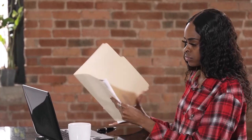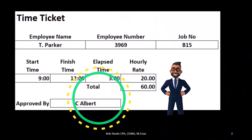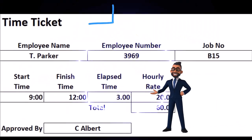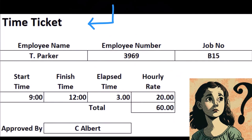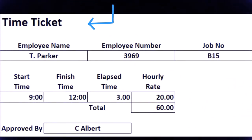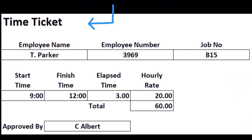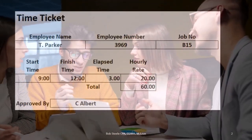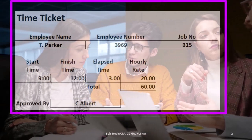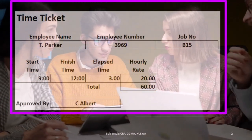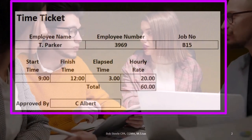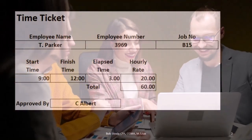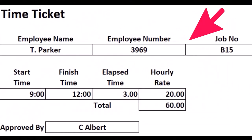For a manufacturing company using a job cost system, when considering a time ticket, we want to keep in mind that when we track the time of workers working on a job, we need to be able to apply it to a particular job. The time ticket is going to be used to track the cost so that we know the cost of the job. Everything we're tracking here is the actual cost of the job.